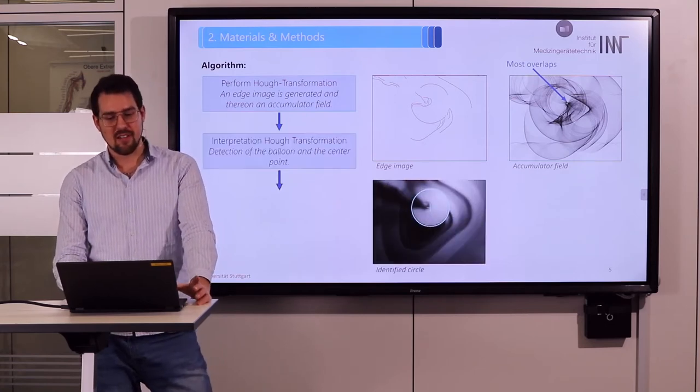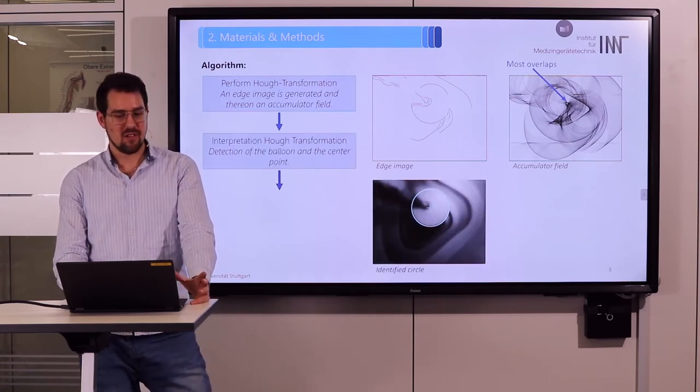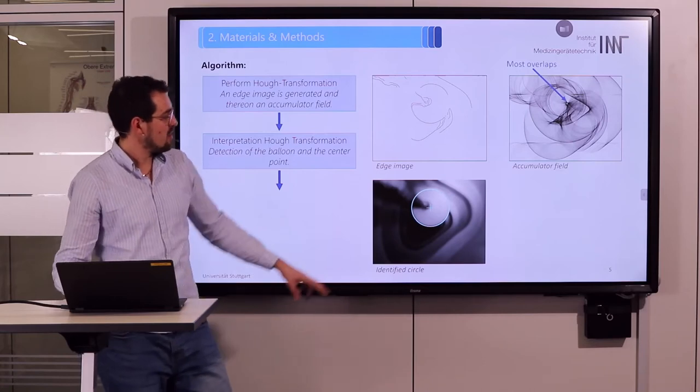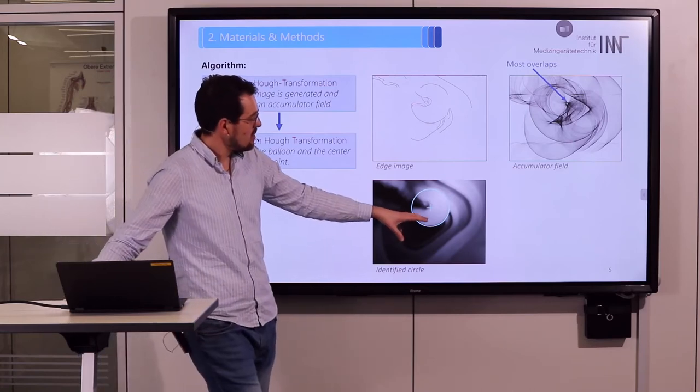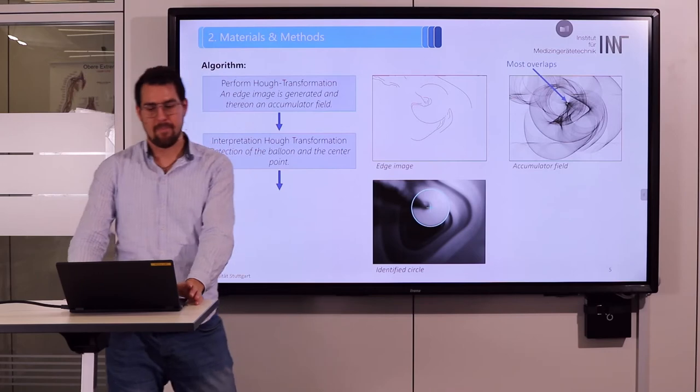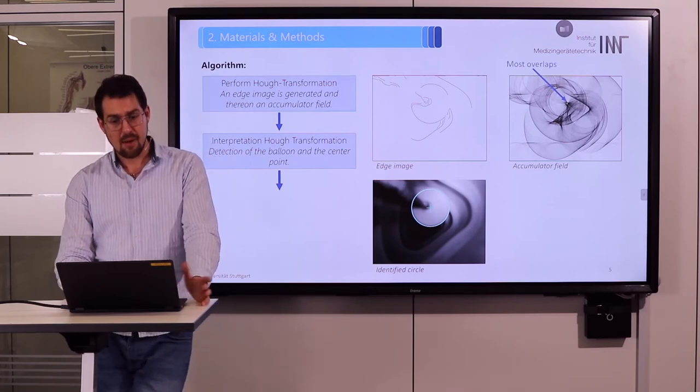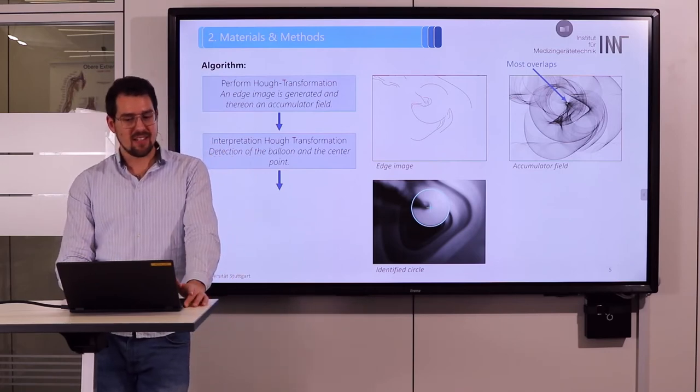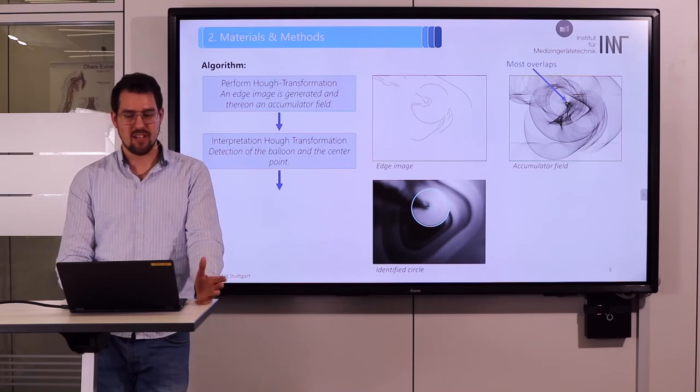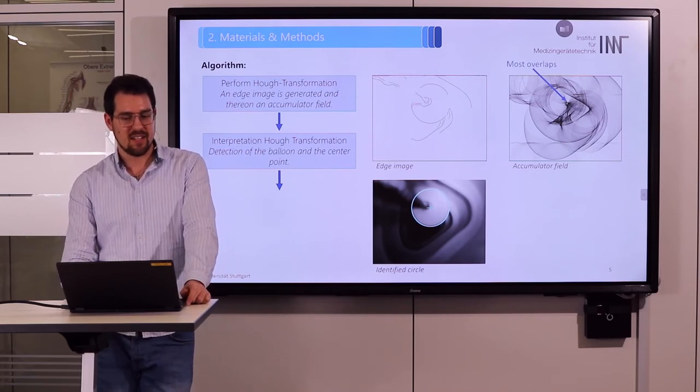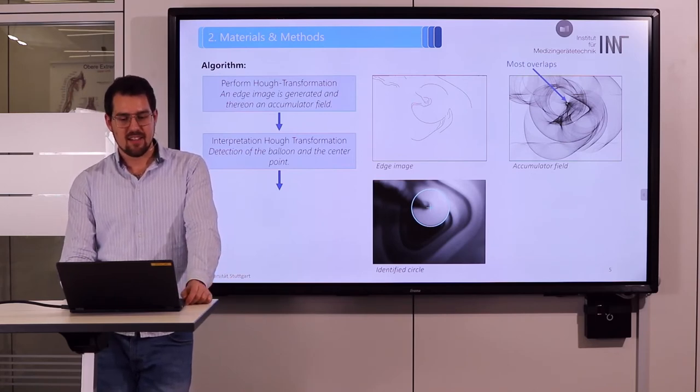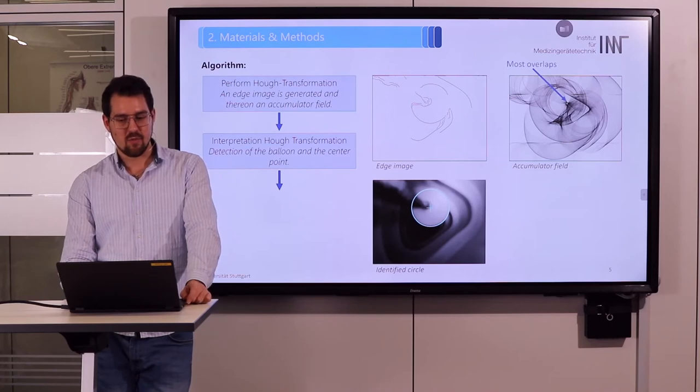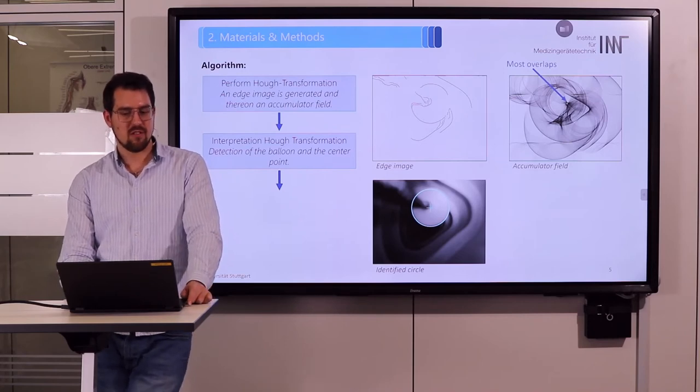Now that we know where the center of the circle is, we can draw it in our image. You can see the circle is actually our balloon. Moreover, you can calculate the deviation to a certain point. The calculated vector indicates the direction in which the endoscope must move to follow the contour of the intestine.